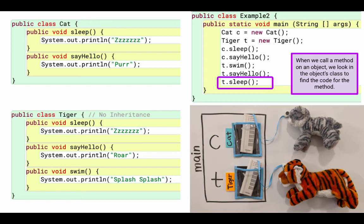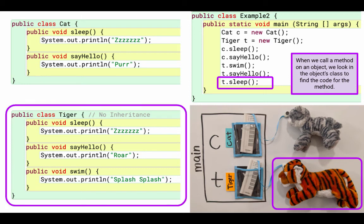So we'll execute t.sleep. Again, we're calling sleep on t, which is referencing this tiger. So that object, because it's a tiger, we're going to look in the tiger class for that code, and we find it, we've got the sleep method there.